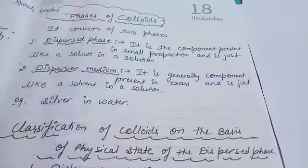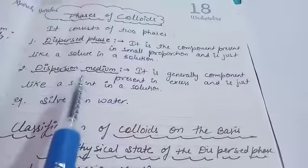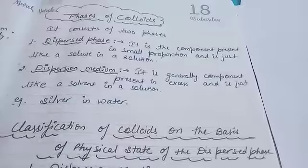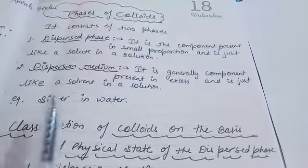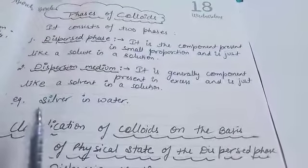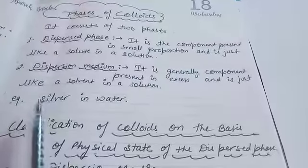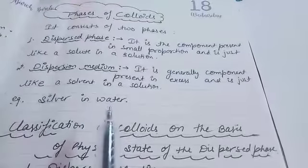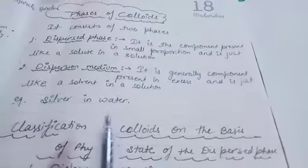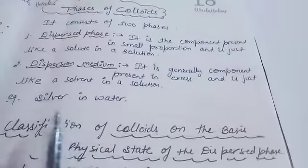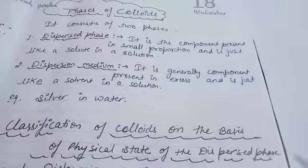Dispersed phase is a component which is present in less amount in a solution, that is known as dispersed phase. And dispersion medium, which is present in more amount in a solution, that is dispersion medium. For example, just see silver in water. So in this, silver is a dispersed phase and water is a dispersion medium.